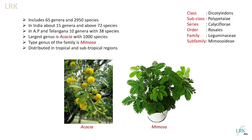Mimosoideae includes 65 genera and 2,950 species distributed in tropical and temperate regions. In India, about 15 genera and above 72 species are seen. In Andhra Pradesh and Telangana, nearly 38 species belonging to 10 genera are seen. Acacia is the largest genus with 1,000 species, and the type genus of this family is Mimosa. You can see the pictures here — this is Acacia and this is Mimosa.